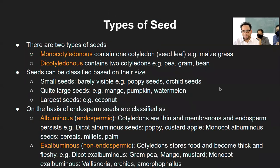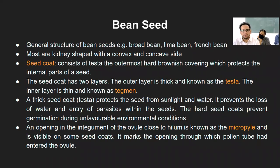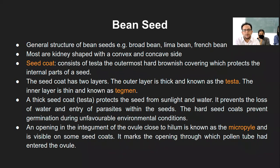We were looking at different types of seeds, and out of these there were two types: monocot and dicot. We were looking at the structure of one dicot seed as an example, that is the bean seed. Any type of seed has three structures mainly involved in it: seed coat, endosperm, and the embryo.